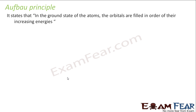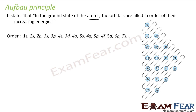The Aufbau principle, which is used to write electronic configuration, states that in the ground state of the atom, orbitals are filled in the order of increasing energy. The order is: 1s, 2s, 2p, 3s, 3p, 4s, 3d, 4p — it doesn't follow a simple sequential pattern. We have studied this in the Aufbau principle. If you want to understand more, you can watch the previous videos where we explained this filling of electrons.